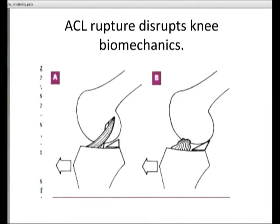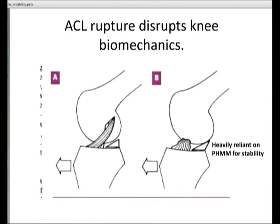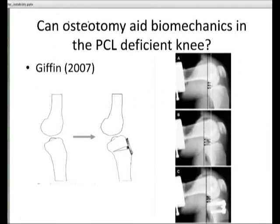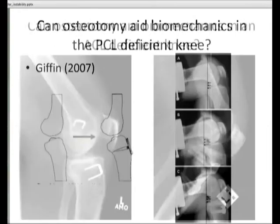Can osteotomy aid biomechanics in a PCL-deficient knee? There are no clinical studies, but certainly cadaver models show it can. This was done by Giffen in 2007 — they used cadaver knees: A was the normal knee, B was after they cut the PCL showing the altered relation of the tibia to the femur, and C was after they performed an osteotomy to correct that, essentially blocking the femur from sliding forward.